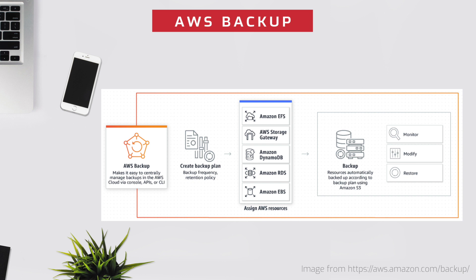With Storage Gateway supported, it basically opens doors to backup our on-premise resources as well. Once we assign the resources to the policy, AWS Backup will automatically back up your resources to Amazon S3. We can monitor, modify, and restore our backups from a centralized backup console. AWS Backup consolidates everything into a single console, which makes it easier to manage and restore.